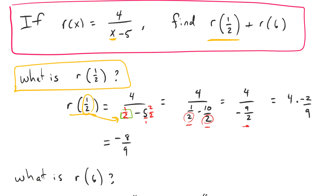4 divided by negative 9 halves — let's take the bottom, flip it, and multiply by the top. So 4 times 2 gives us 8, and that's negative 8, and 1 times 9 gives us 9. That gives us our answer: negative 8 over 9. So r of 1 half equals negative 8 over 9.